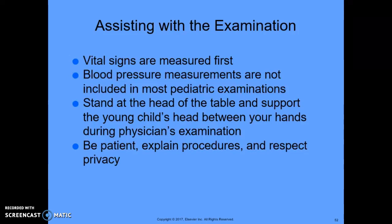For the pulse: if the child is younger than age two, the pulse is measured apically by placing the stethoscope on the left side of the chest, medial to the nipple, and counting the beats for one full minute for accuracy. An alternative method for very young children is to use the brachial artery in the upper arm. After age two, the child's pulse may be taken at the radial pulse site. Procedure 18-4 describes how to perform pediatric vital signs and vision screening, which we will be doing in lab and in class.